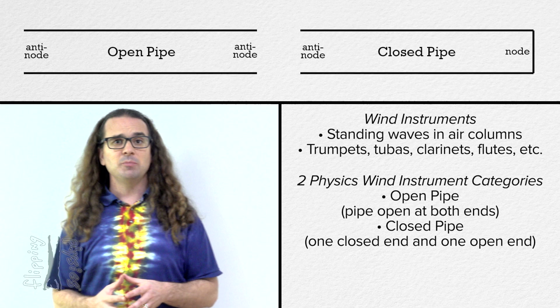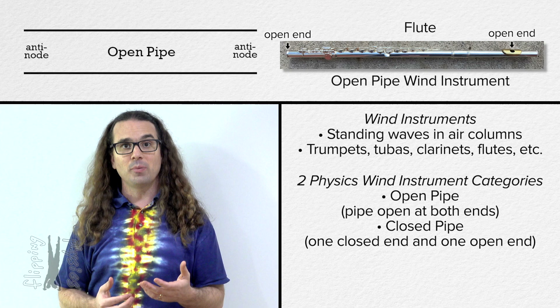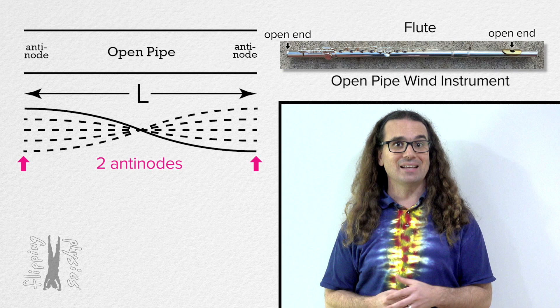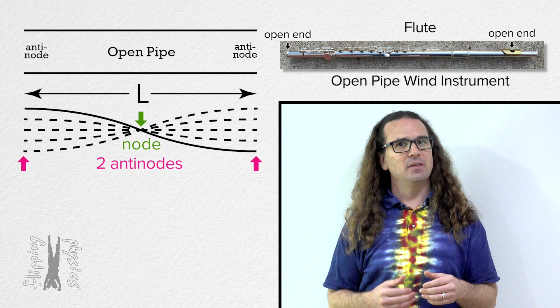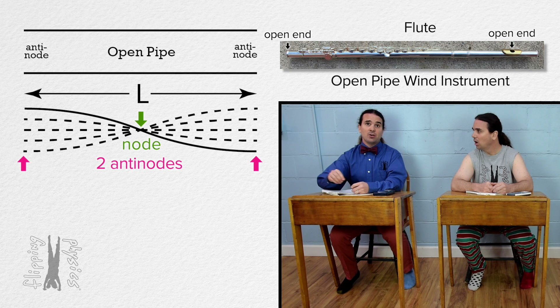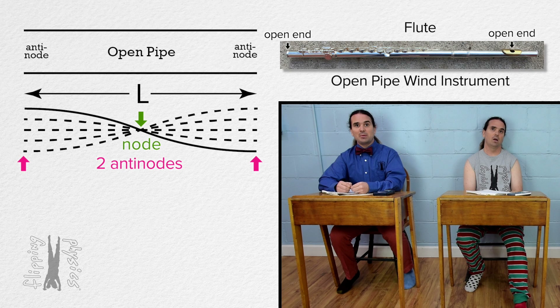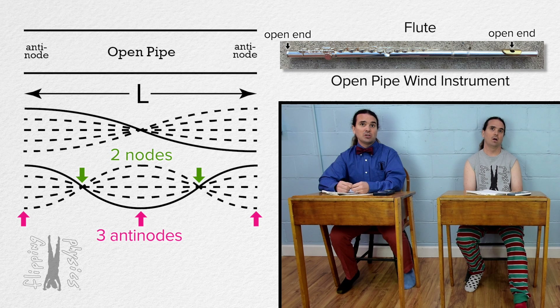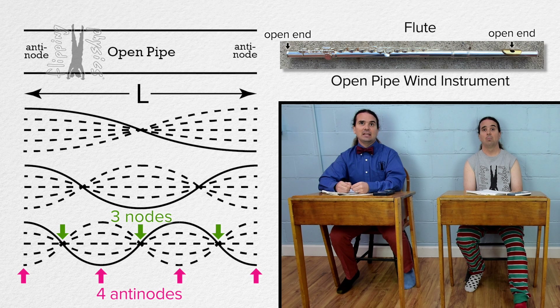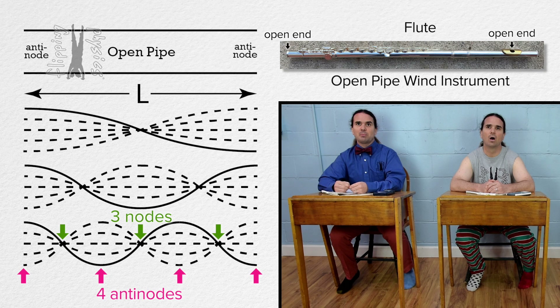Let's begin with an open pipe instrument like a flute. Considering both ends are open and an open end is an anti-node, the first standing wave pattern has two anti-nodes, one at each end, and one node right in the middle. For the next standing wave pattern there would be three anti-nodes — one on each end and one in the middle — and two nodes, one between each pair of anti-nodes. For the next pattern we have four anti-nodes and three nodes, with anti-nodes at each open end and two anti-nodes located one third of the way from each end.